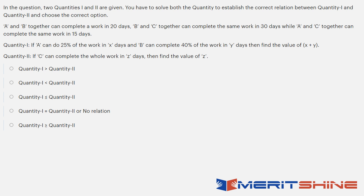Next is a quantity comparison question. One quantity involves A and B doing work together in given days and B and C, A and C likewise — a typical time and work equation. I would not do this with limited time, as it requires solving for individual rates first, then comparing. I would skip this and come back if time permits.